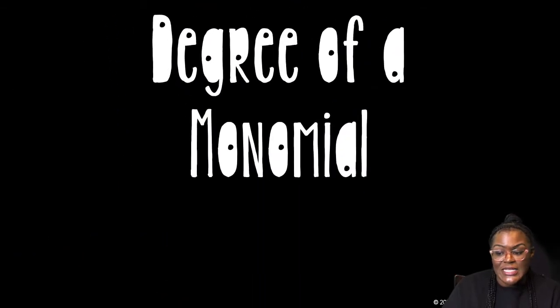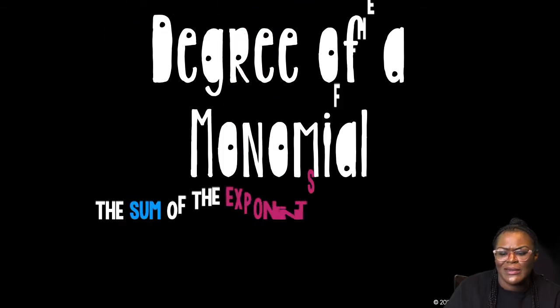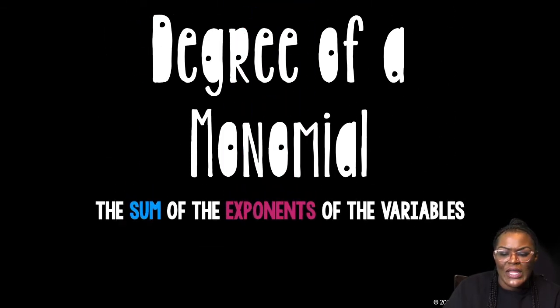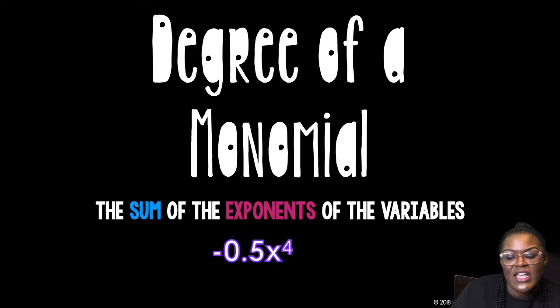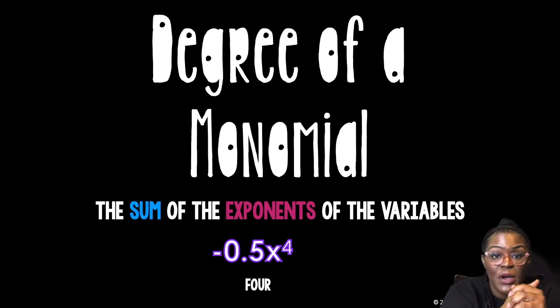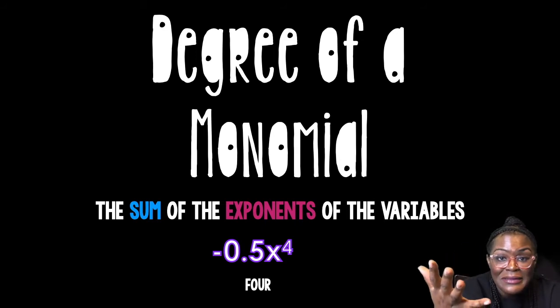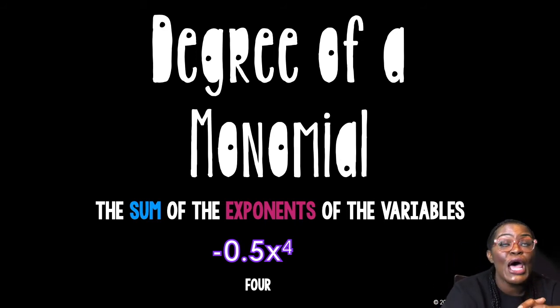Let's talk about degrees. The degree of a monomial is the sum of the exponents of the variables. So that means you're adding the exponents of the variables. So let's say I have negative 0.5 x to the 4th. What is the degree? The degree is 4 because the exponent, I just got one exponent, it's a 4. And the sum of 4 and nothing is just a 4.